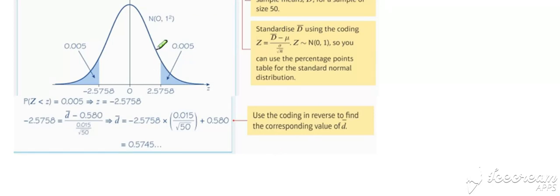So the procedure for finding the critical region for a test is to, first of all, consider the standard normal and the significance level. In this case, a two-tailed 1%. So each tail is 0.005.